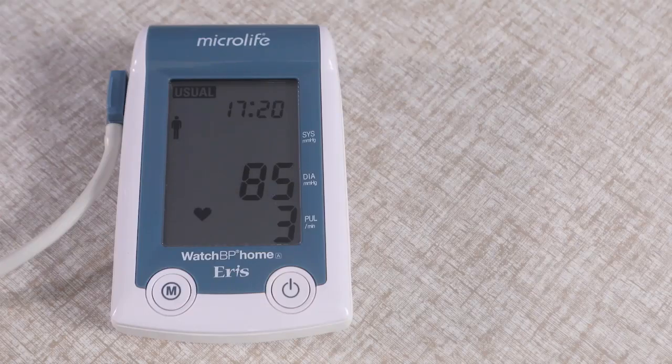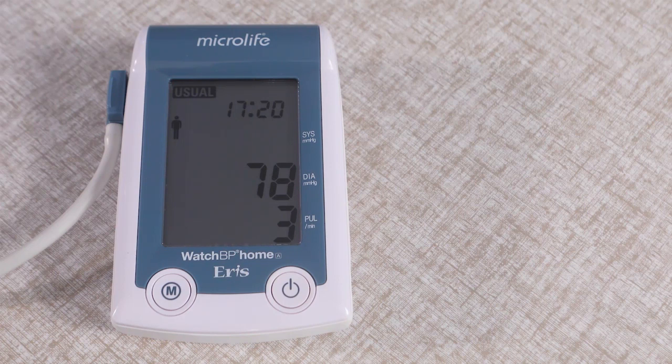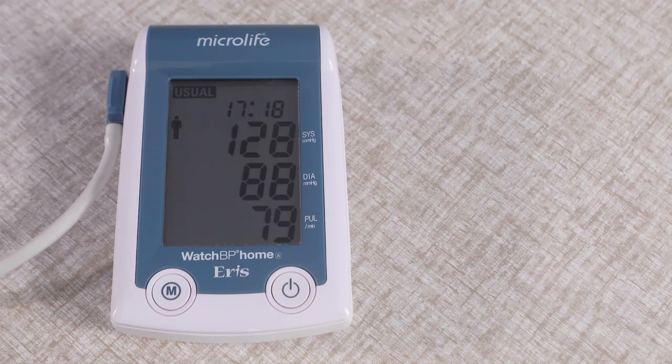In case of movement or too much variation in blood pressure, the device may take a fourth reading. After the third measurement, you have measured your blood pressure and the result will appear on your device screen.